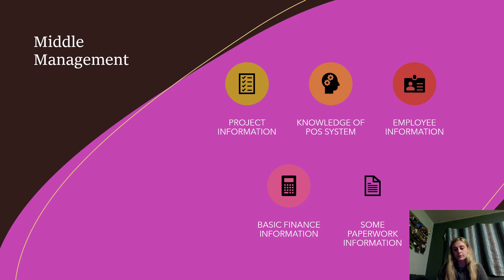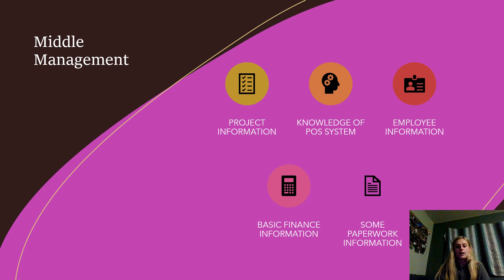The next step up from there is middle management. They need to know the same things as operational management — project information and knowledge of the point of sale system — because if operational management is understaffed they need to be able to step in and fill that role. But additional information they need that operational management doesn't would be employee information: birthdays, social security numbers, just things for paperwork.